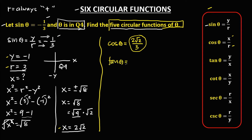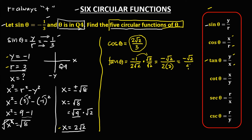For tangent theta: tangent θ = y over x, so y is negative 1 over x which is 2√2. We need to rationalize since the denominator contains a radical. Multiplying both sides by √2 gives negative √2 over 2 times 2, so tangent θ = −√2 / 4.